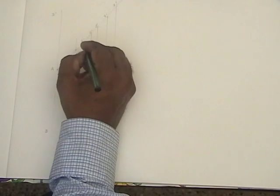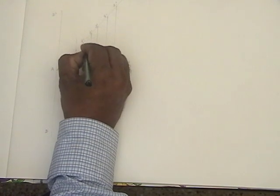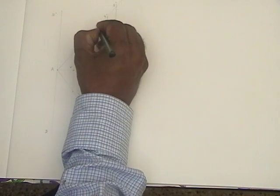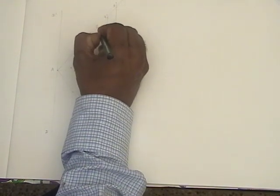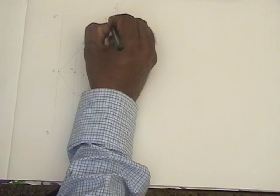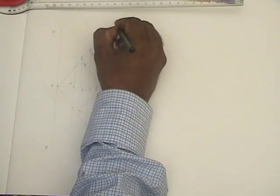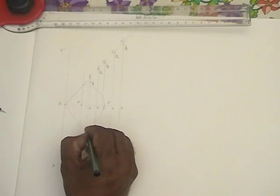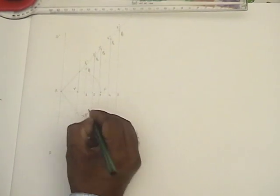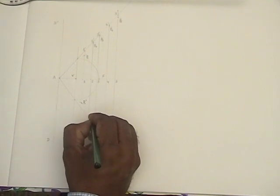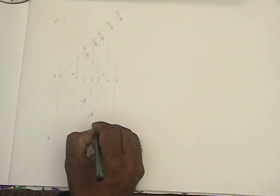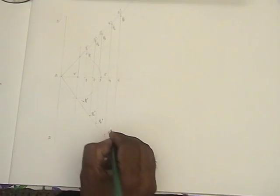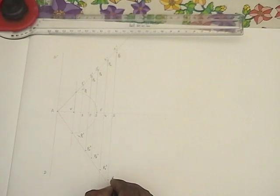So now name these points. This one is P1, second one is P2. Then you have P3, P4, P5. Corresponding points, P1', P2', P3', P4', and P5'.